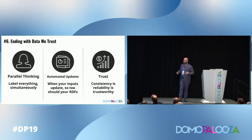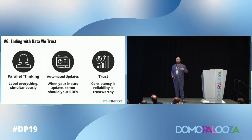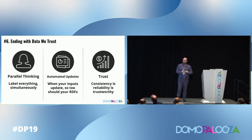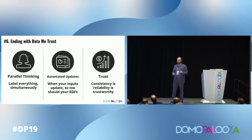When working with multiple data flows, label everything so you know which one you're in just by looking at the name — whether you're in your frequency or your legacy data flow. When your inputs update, so too should your recursive data flows; use that logic as part of this. Trust for us is consistency — reliability is trustworthiness.